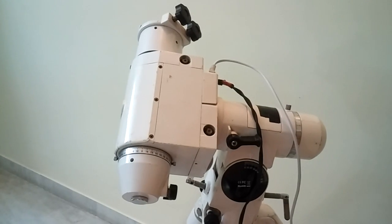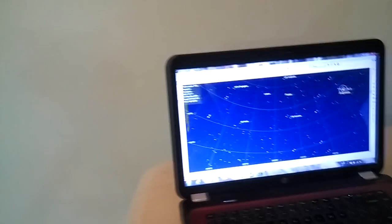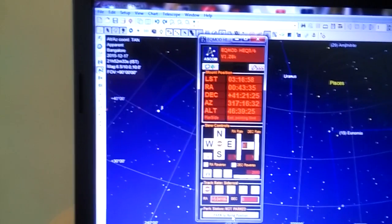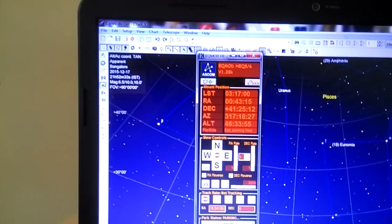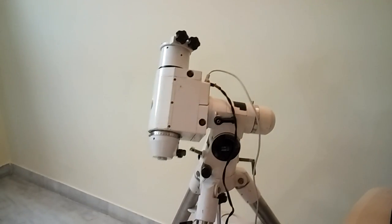Well, if it was outside it would be looking at Andromeda right now. Let us now take the mount back to home position. I shall click on park to home position, and you will see that the mount is going into park position.